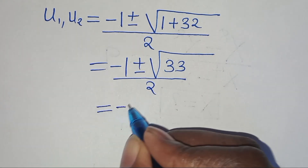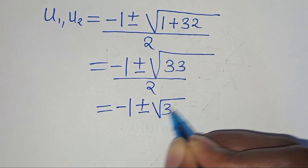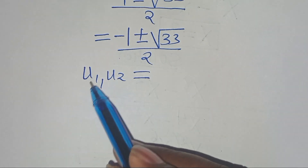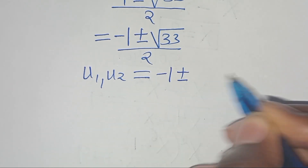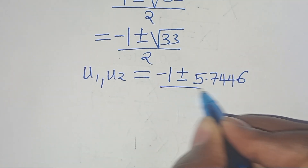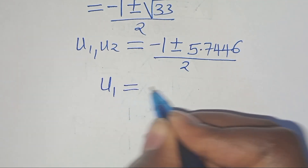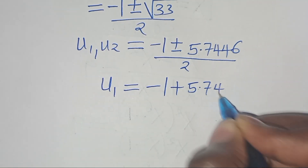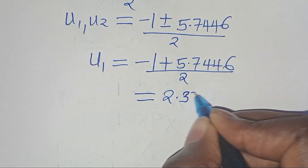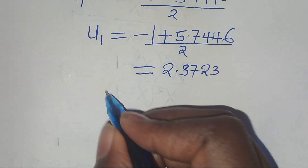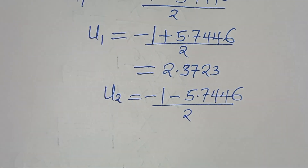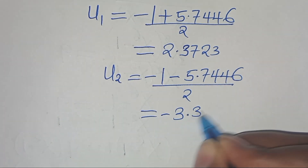So therefore, here we have minus 1 plus or minus the square root of 33, over 2. This implies that u1 and u2 — we have that u1 and u2 equal minus 1 plus or minus the square root of 33, which is approximately 5.7446, everything divided by 2. So this implies that u1 equals minus 1 plus 5.7446 divided by 2, which is equal to 2.3723. And u2 equals minus 1 minus 5.7446 divided by 2, which is equal to minus 3.3723.